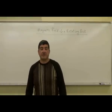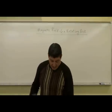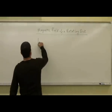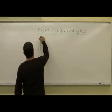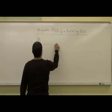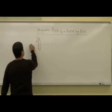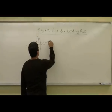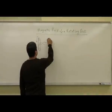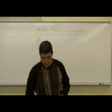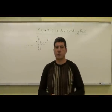We're going to calculate the magnetic field of a rotating disc. The disc is a solid charged disc rotating, and we want to calculate the magnetic field along the axis of the disc, a distance d away from the center of the disc.